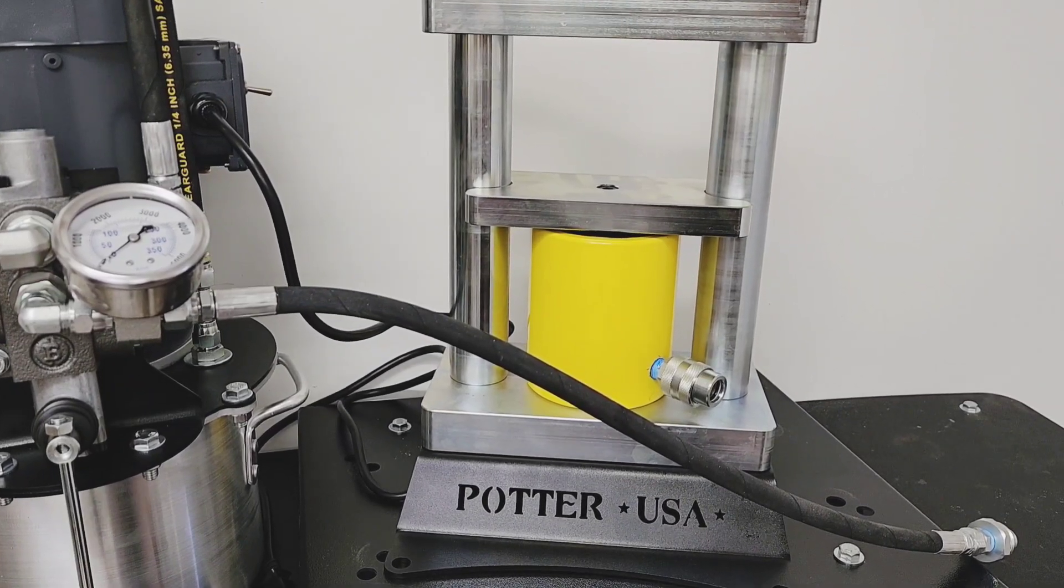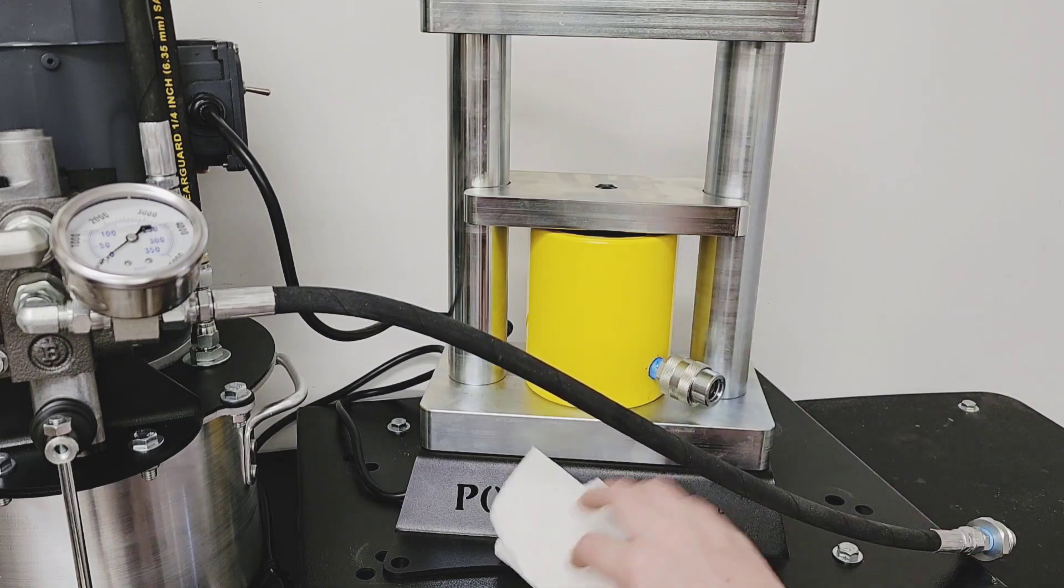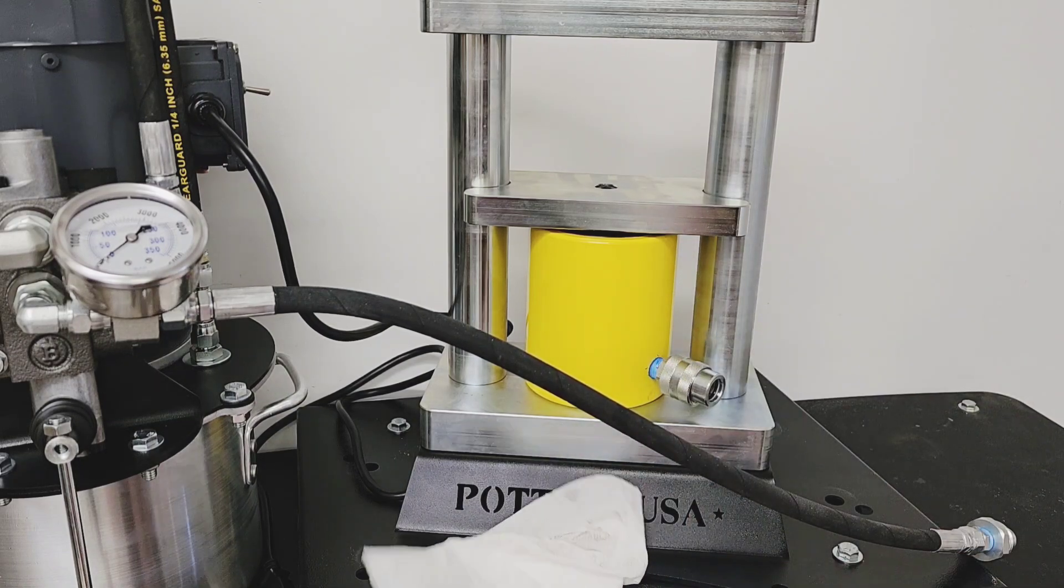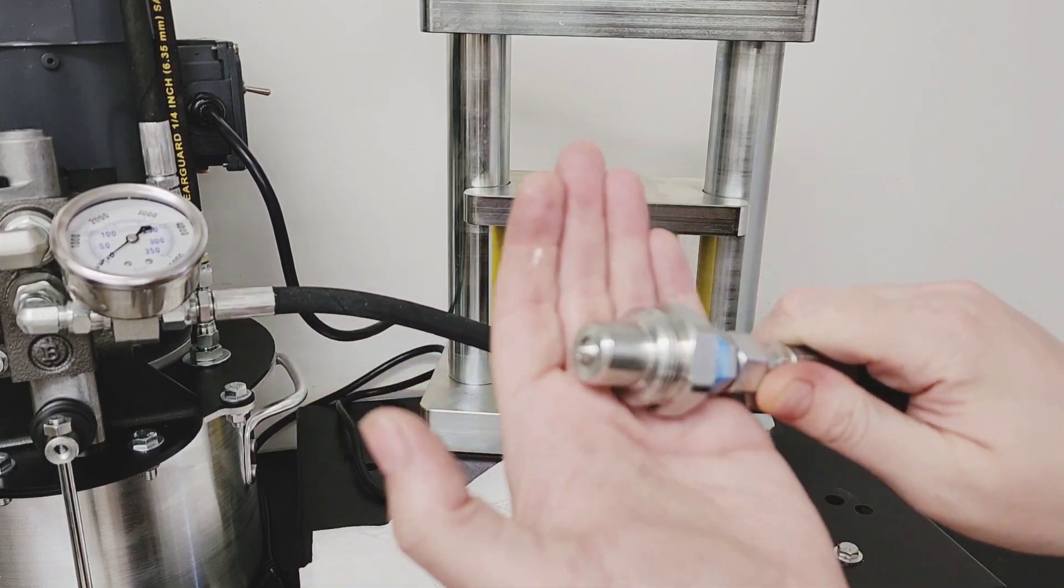When you receive your press, there may be a black plastic plug on the quick connect hose connection point on the cylinder. You want to remove that, as well as any cap on the end of the hose if it's there.